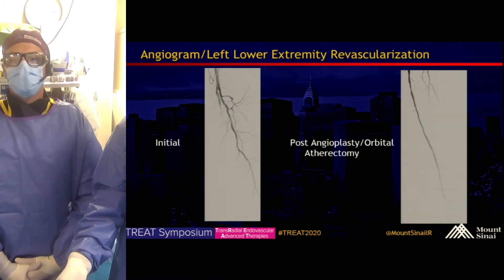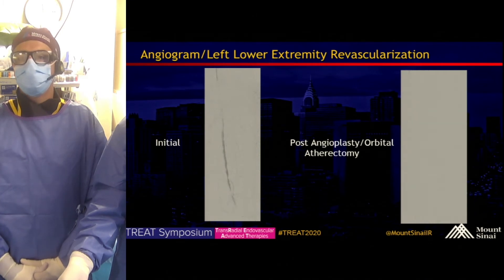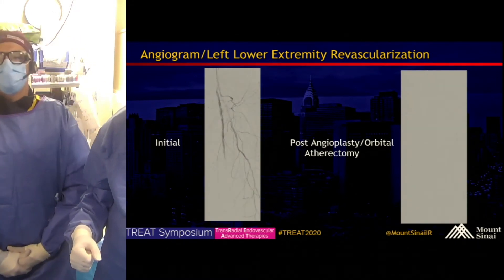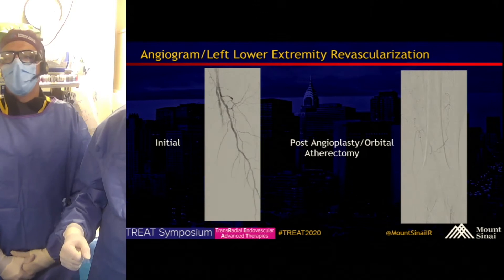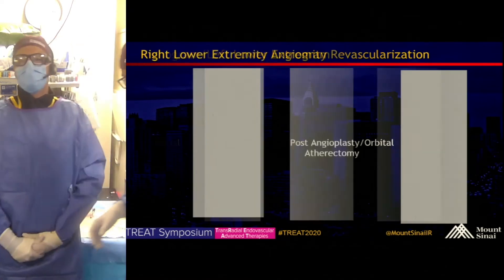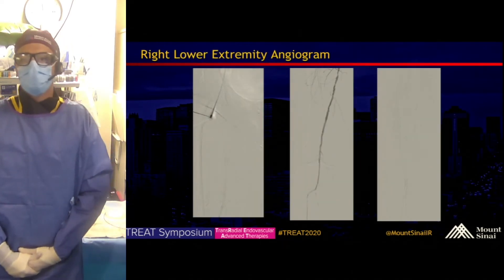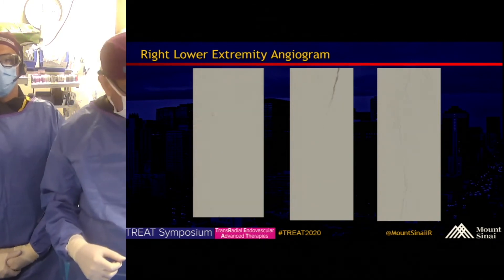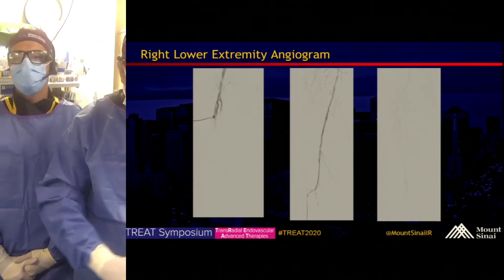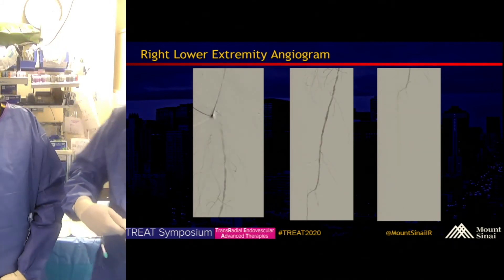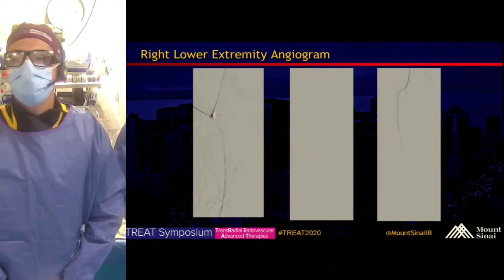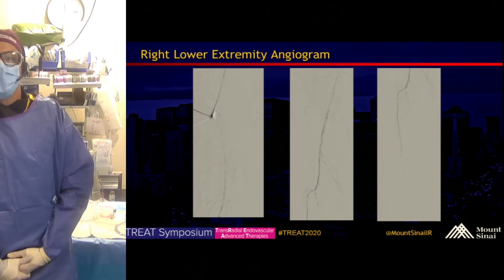A few select images from our left lower extremity revascularization: there's a short-segment left distal SFA high-grade stenosis and near-occlusion, which was resolved after angioplasty and orbital atherectomy. At the time of that left lower extremity revascularization, a diagnostic right lower extremity angiogram was also performed. There was multifocal right SFA moderate-to-severe stenosis, and on the right image you can see her distal runoff — she has single-vessel runoff via the right anterior tibial, with some moderate stenosis of that proximal right anterior tibial vessel.